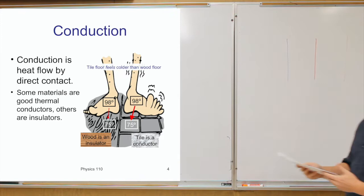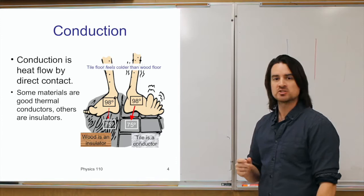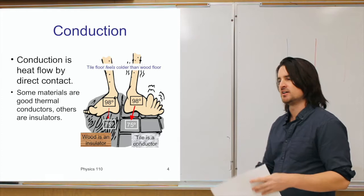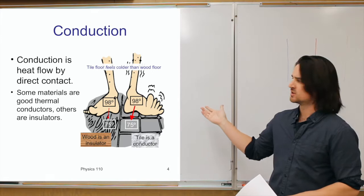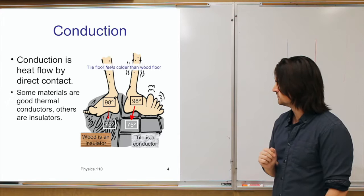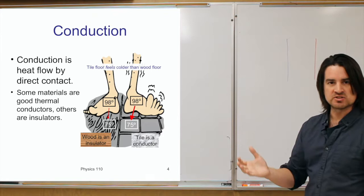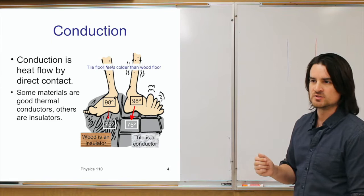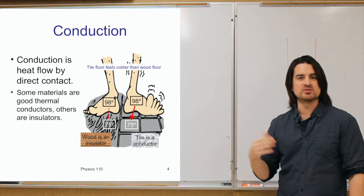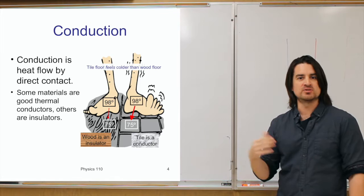Conduction is essentially heat flow by direct contact — one substance comes into contact with another material. An example would be your feet touching a tile floor or a wood floor. Materials will conduct heat more or less easily depending on the type of material. Materials that conduct heat very well we call conductors, and materials that do not conduct heat well — poor conductors — we call insulators.